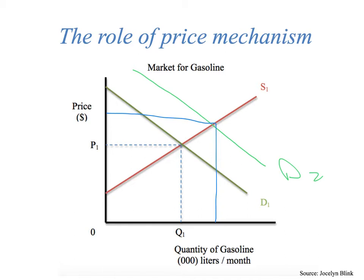And since we can assume the producers are rational and they wish to maximize their profits, then a higher price will give producers an incentive to produce more of the good — in this case, gasoline. So therefore, producers will allocate more resources towards those goods where the demand is the highest, since this is where they will be able to make more profit.